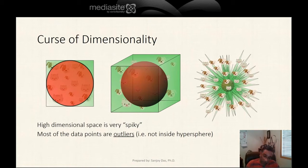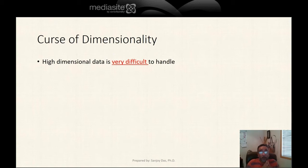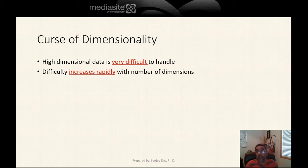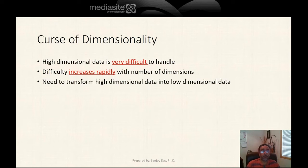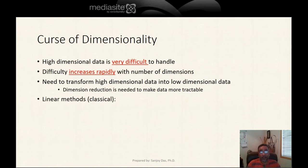That's one aspect of the curse of dimensionality, and there are many other reasons why dimensionality is in fact a curse. High dimensional data is very difficult to handle, and the difficulty increases rapidly with the number of dimensions. For example, 500,000-dimensional data is extremely difficult to handle. So that's why we need to reduce the number of dimensions — dimension reduction is needed to make the data more practical.